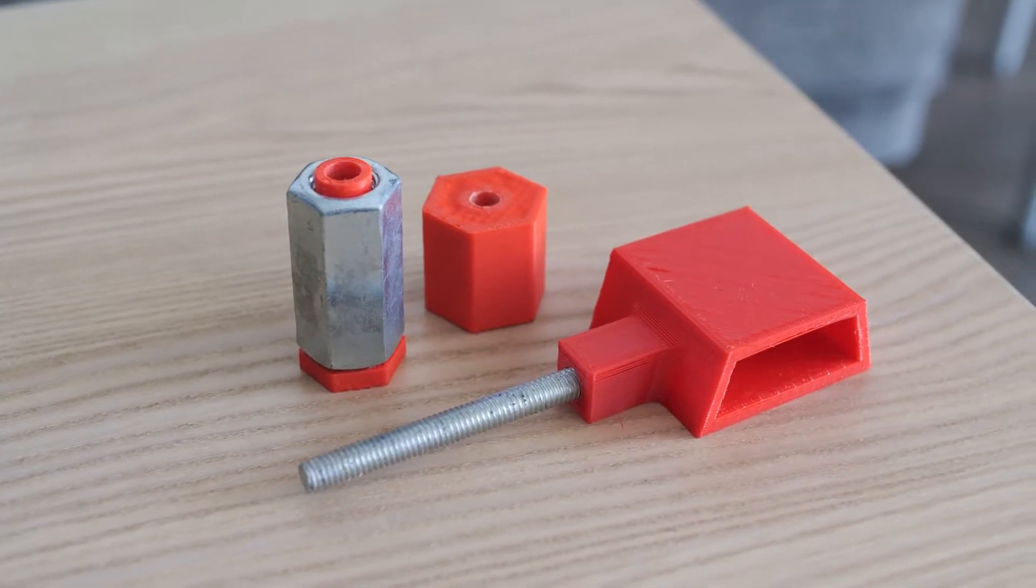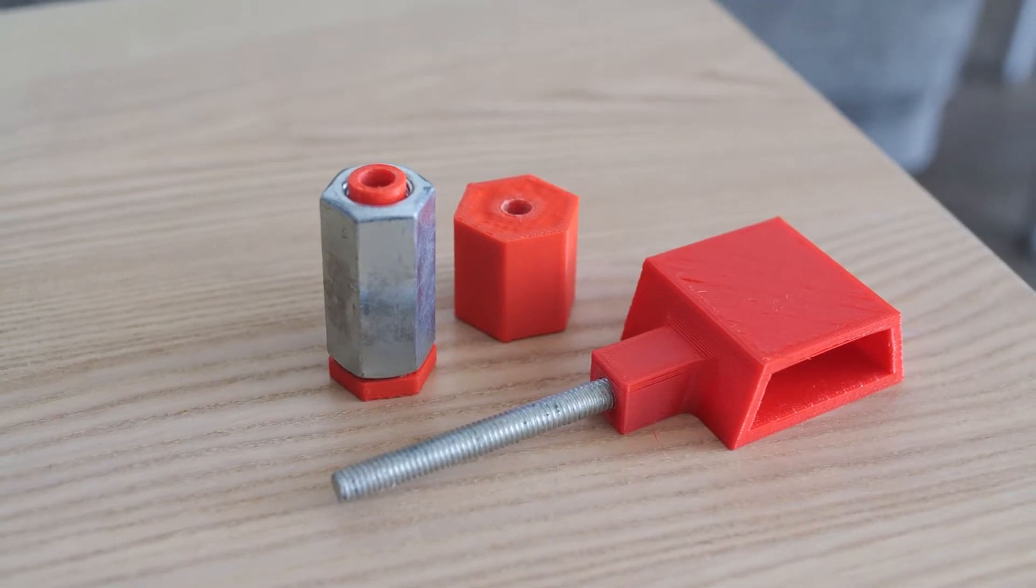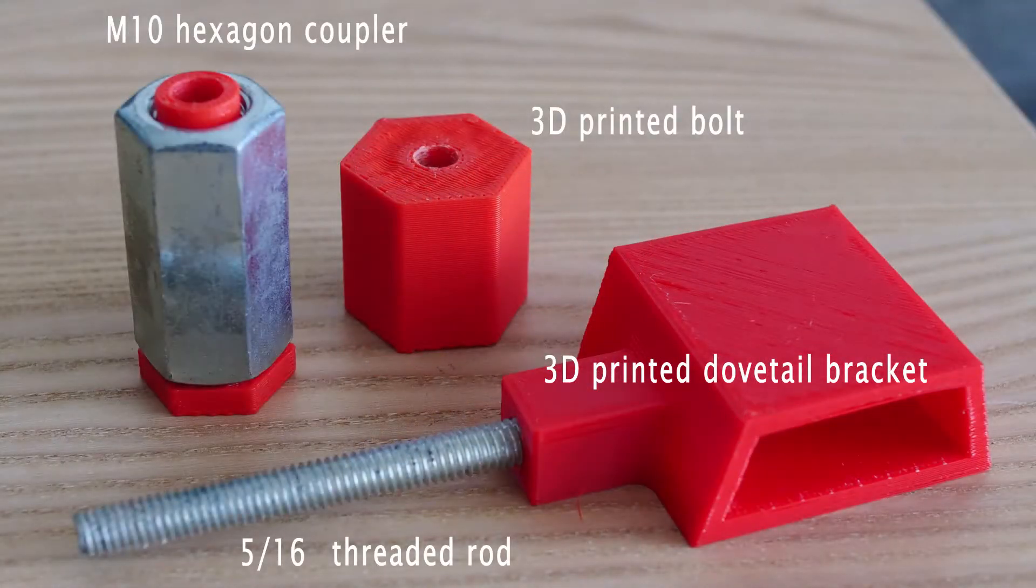These are the individual pieces of the outrigger: a 5/16 inch threaded rod which has been attached to the 3D printed bracket in the shape of the dovetail, and then on the left we have a hex coupler with a 3D printed insert, and the little guy at the back is basically a nut to hold the whole thing in place.